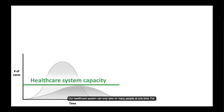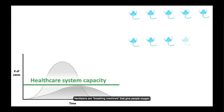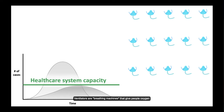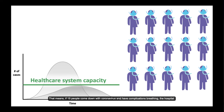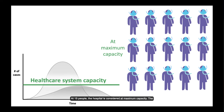Our healthcare system can only take so many people at one time. For instance, in our local hospital they have about 15 ventilators that are available. Ventilators are breathing machines that give people oxygen when they have trouble breathing, like if they have pneumonia or in severe cases of flu. That means if 15 people come down with coronavirus and have complications breathing, the hospital can tend to the needs of these 15 people until they're well enough to recover. At 15 people, the hospital is now considered at maximum capacity.